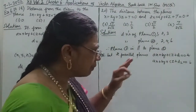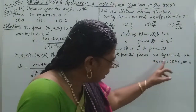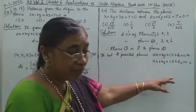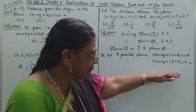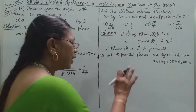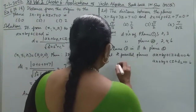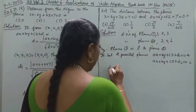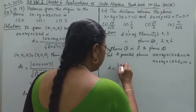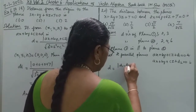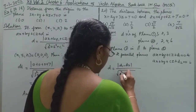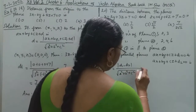If we look at the distance, the direction ratios of the normal will be the same. This will be easier. So, the distance formula is: modulus of D1 minus D2, divided by the square root of a squared plus b squared plus c squared.